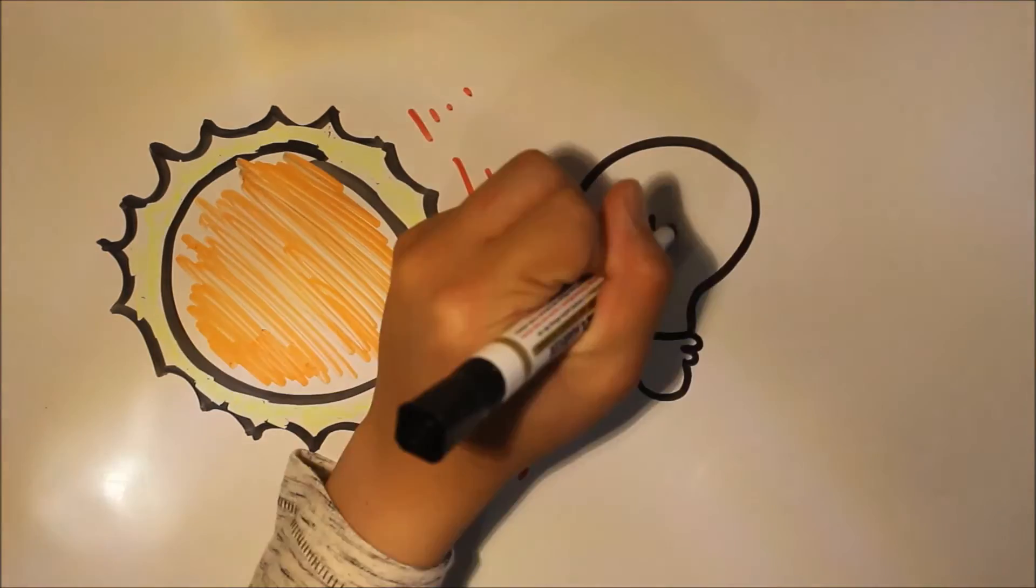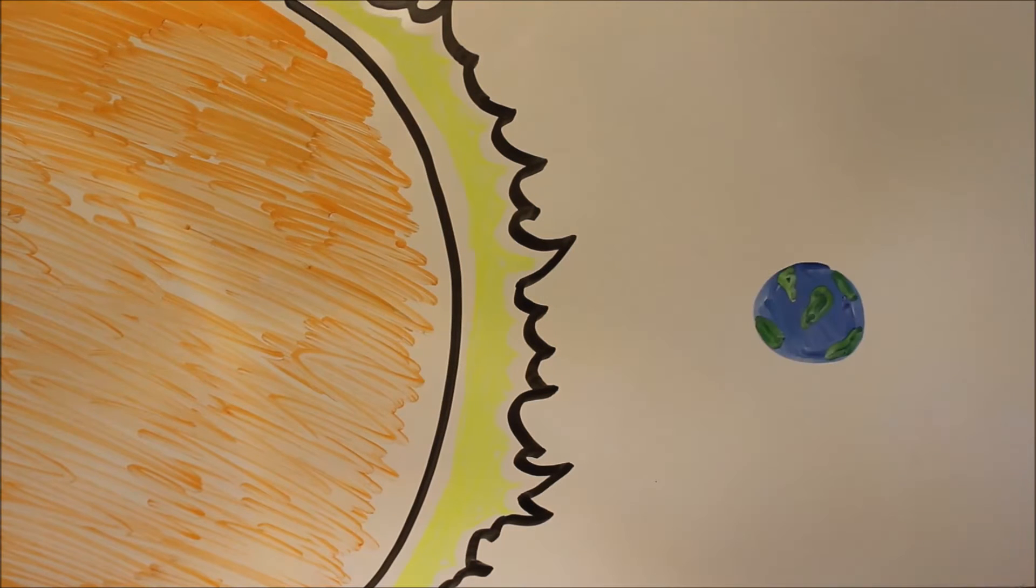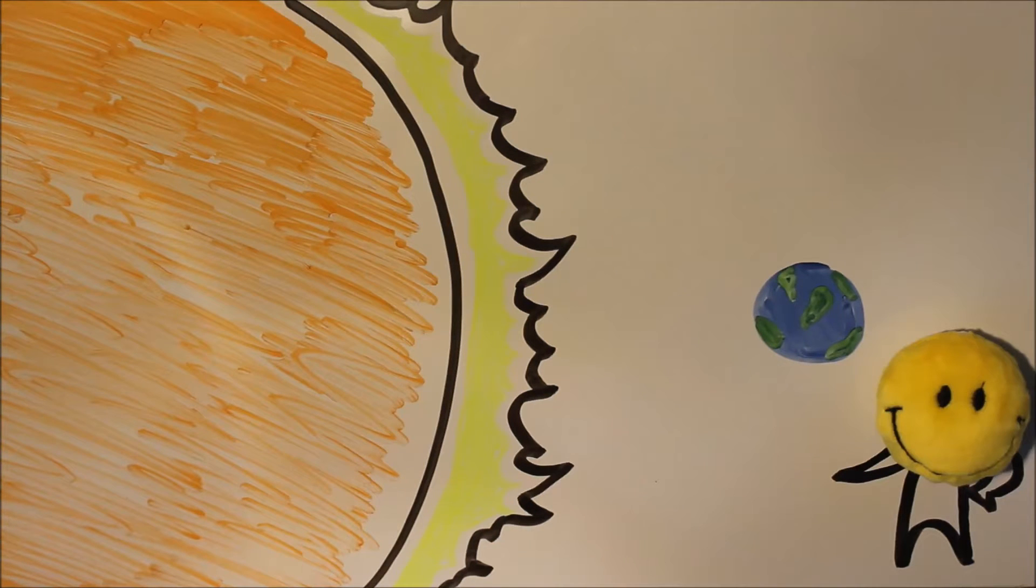The sun provides us with light, heat and energy. The sun is 149.6 million kilometres from earth. Earth is the right distance away from the sun to support life.